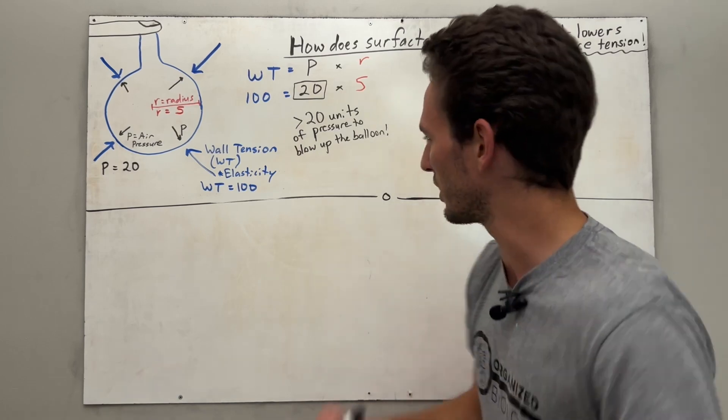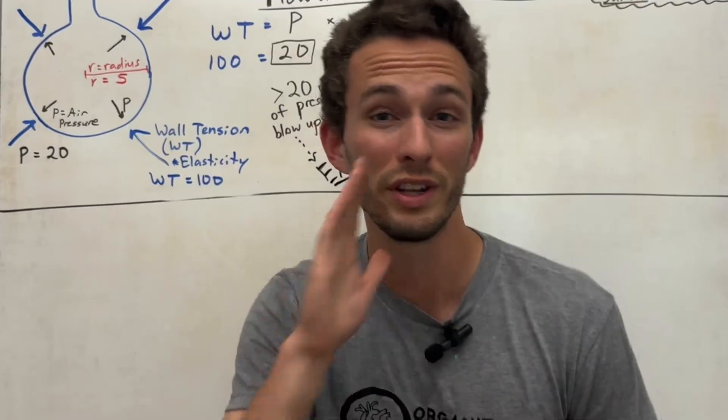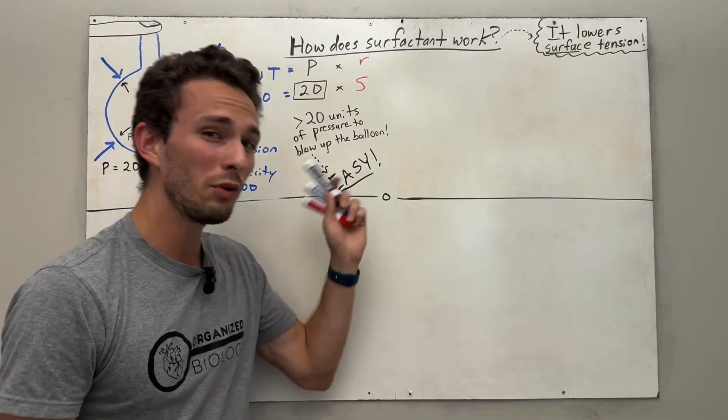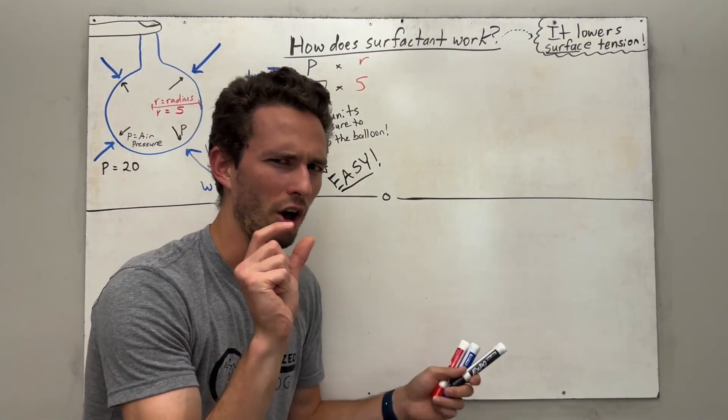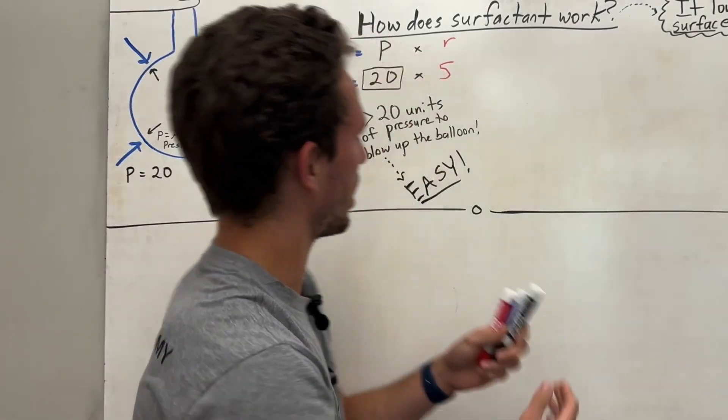Because remember, if this P is 20 here, pushing out the radius is 5, anything more than 20 and that force is going to be greater than the wall tension, thus inflating the balloon. So we're going to say that putting 20 units of pressure to blow it up is relatively easy. When you blow up the alveoli in your lungs, you want it to be easy. So remember, we want the P to be small. No, that's not an innuendo, but I realized that after I said it. Moving on.